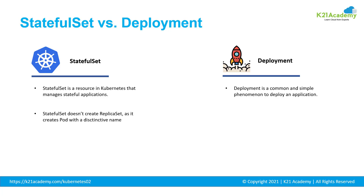Though stateful set is also a controller, it doesn't create a replica set. Instead, it creates pods with a unique way of naming them. While deployments first create a replica set, which then creates a pod. To understand this better, if we want to create a deployment with one replica, the first step would be to check if the desired state of replica set is 1 and the current state is 0 — so first a replica set will be created, followed by a pod.